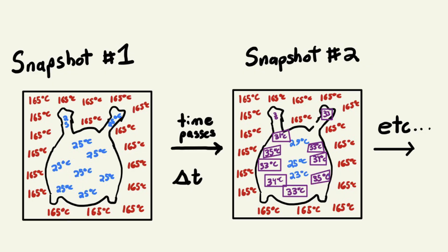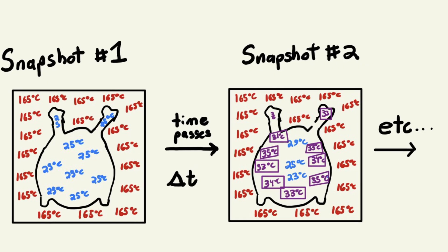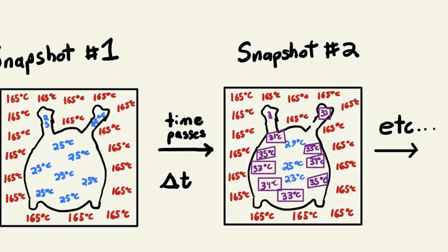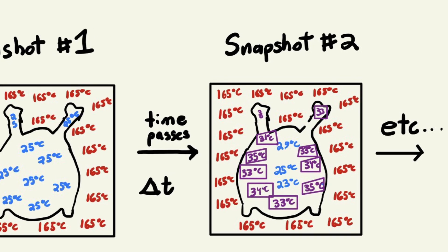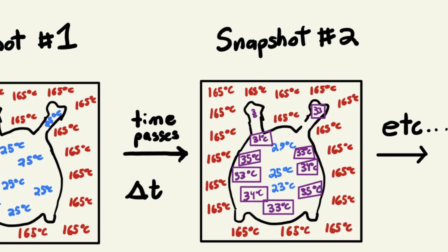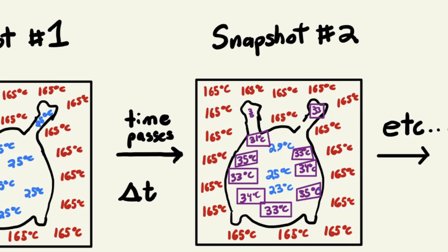So we need to be very specific about how this problem is being set up. We have the initial state of the turkey, and what we're going to do is advance time a little bit and get a new snapshot of the turkey, then advance time a little bit more and get another snapshot — and between those snapshots the temperature is going to change. The question is by how much does it change, and there are a few properties here.